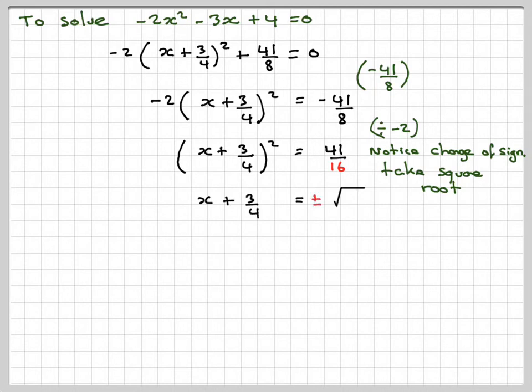And when we take the square root, we're going to get plus or minus the square root of 41. And the square root of 16 is actually 4. So we just write that as 4. Then we take 3 over 4 from both sides. So we get x equals minus 3 over 4 plus or minus the square root of 41 over 4.